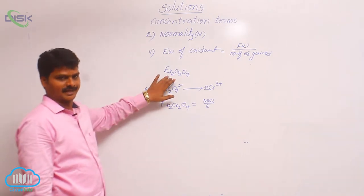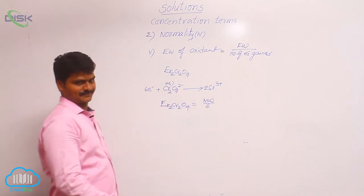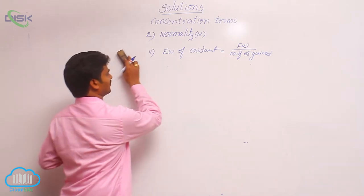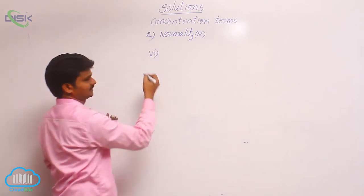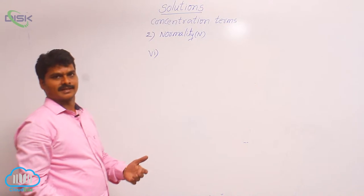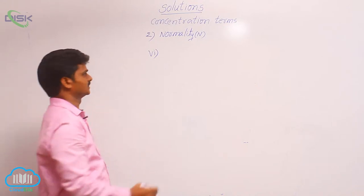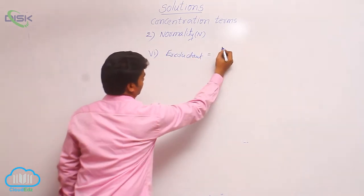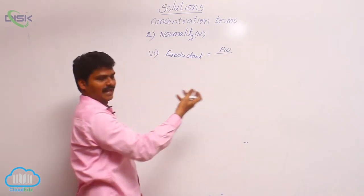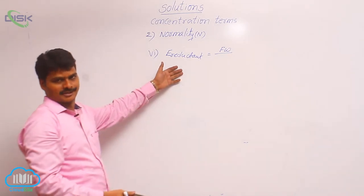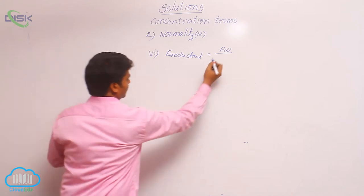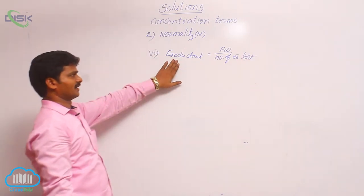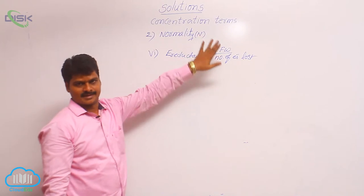For an oxidant, equivalent weight equals molecular weight divided by N factor. Now let us see how to find the equivalent weight of a reductant. A substance in a redox reaction which undergoes oxidation is called a reductant. Equivalent weight of a reductant equals its formula weight divided by N factor, where N factor is the number of electrons lost, since oxidation means loss of electrons.